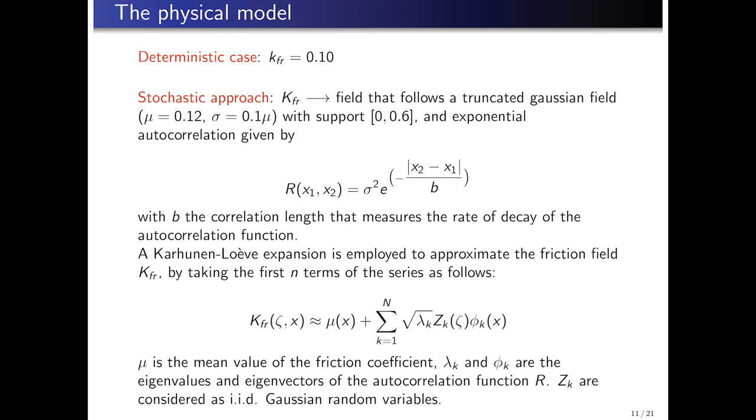Second, for the stochastic case, the friction force will follow a truncated Gaussian field with a mean value of 0.12 and a deviation of 10% of the mean value. The support considered goes from 0 to 0.6. The autocorrelation is assumed to be an exponential function with b as the decay rate. Then, the field is obtained by employing a Karhunen-Loève expansion, as shown in the slide.